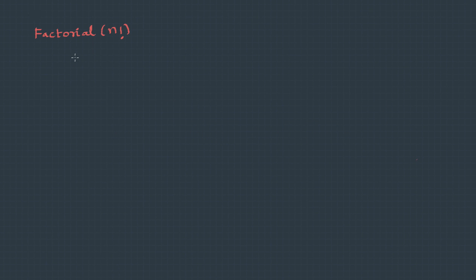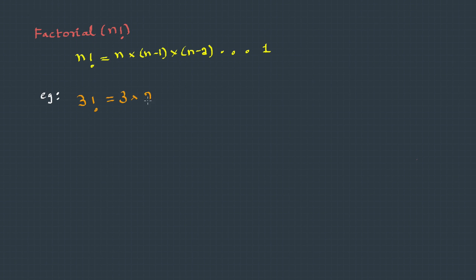Factorial is a product of numbers from 1 to n. When we write n factorial, it is n into n minus 1 into n minus 2, and so on till 1. For example, 3 factorial is 3 into 2 into 1, which is 6. 5 factorial is 5 into 4 into 3 into 2 into 1, which is 120. What do you think will be 0 factorial?